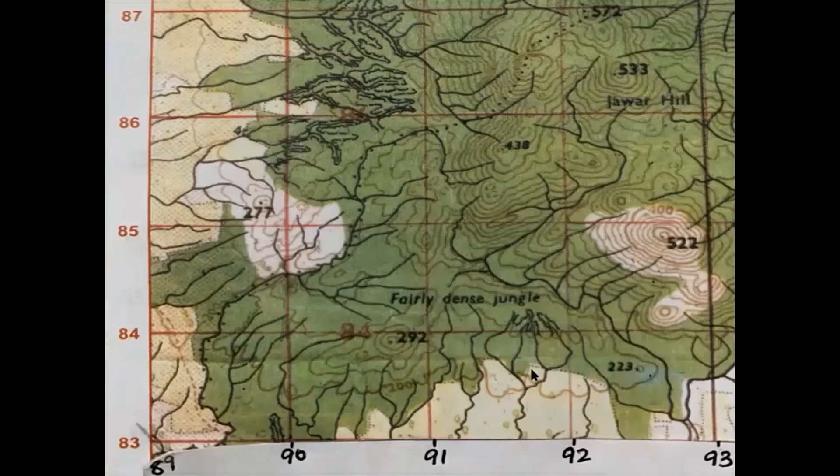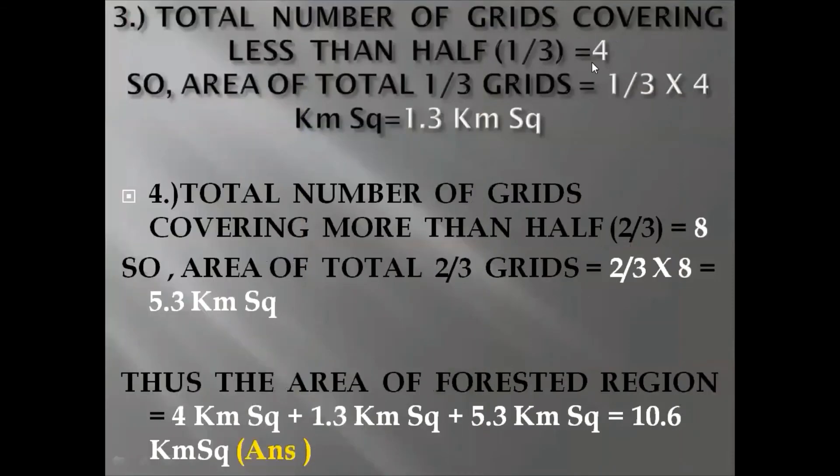Then you will come down I think this one is the third grid. Coming this one this grid is the fourth grid. I have written 4 here 1 by 3 into 4 is equal to 1.3 kilometer square.